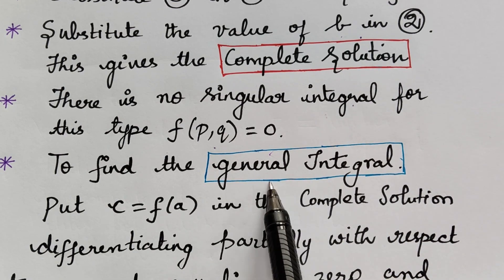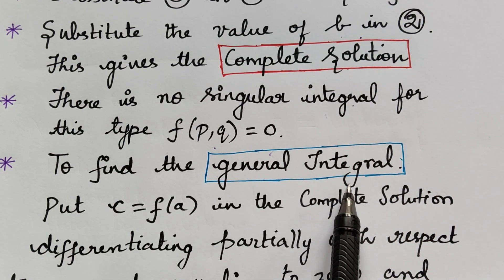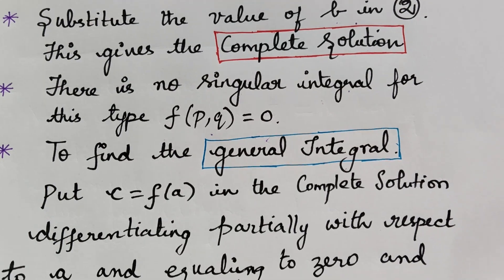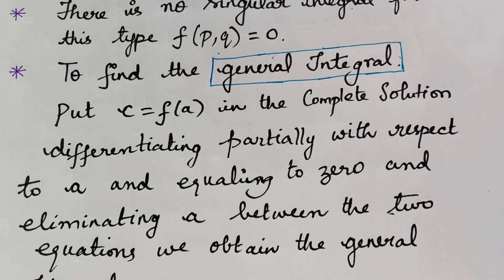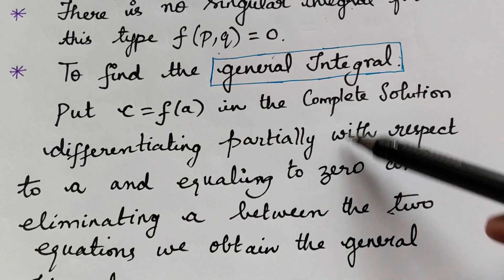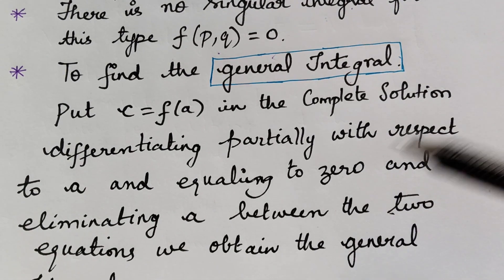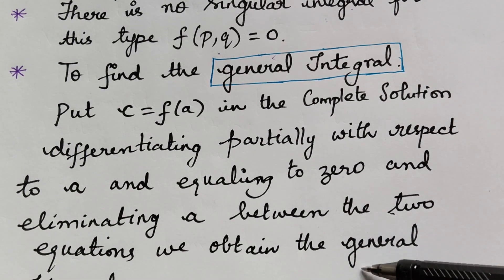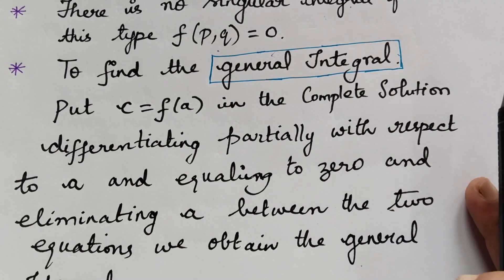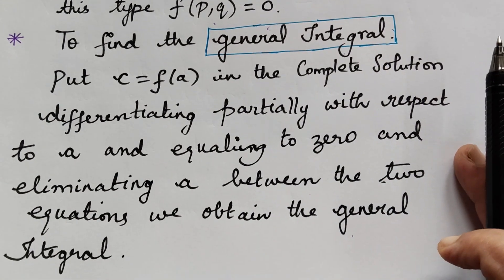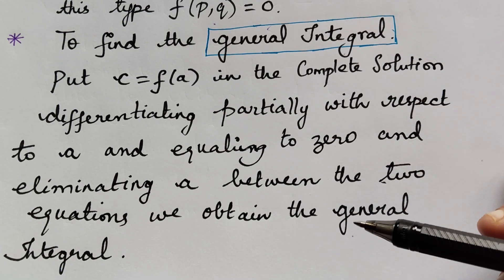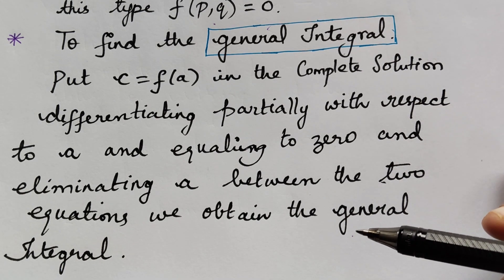The next one is the general integral. In order to find the general integral, we have a small procedure which I will explain while doing the problem. Now we will solve a problem in order to understand the method of solving the first type of partial differential equation, f of p, q is equal to 0.